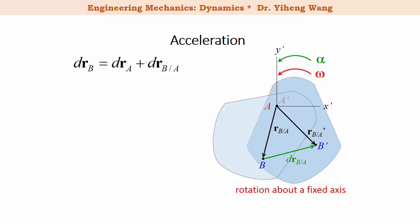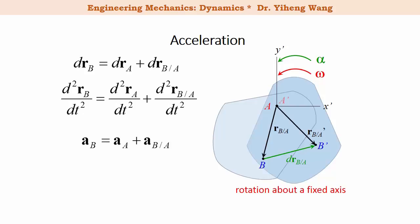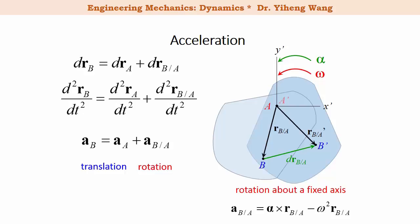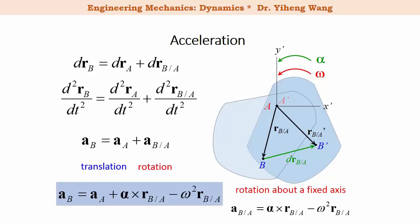Similarly, taking the second time derivative gives the equation relating the linear acceleration of two arbitrary points in the same rigid body undergoing general plane motion. The linear acceleration of particle B has two contributions: aA, the linear acceleration of particle A, represents the contribution from translation, and the relative acceleration of B with respect to A represents the contribution from rotation. For rotation about a fixed axis, the linear acceleration has two components — tangential and normal acceleration. Combining these, we can write the equation for the absolute linear acceleration of particle B through relative motion.